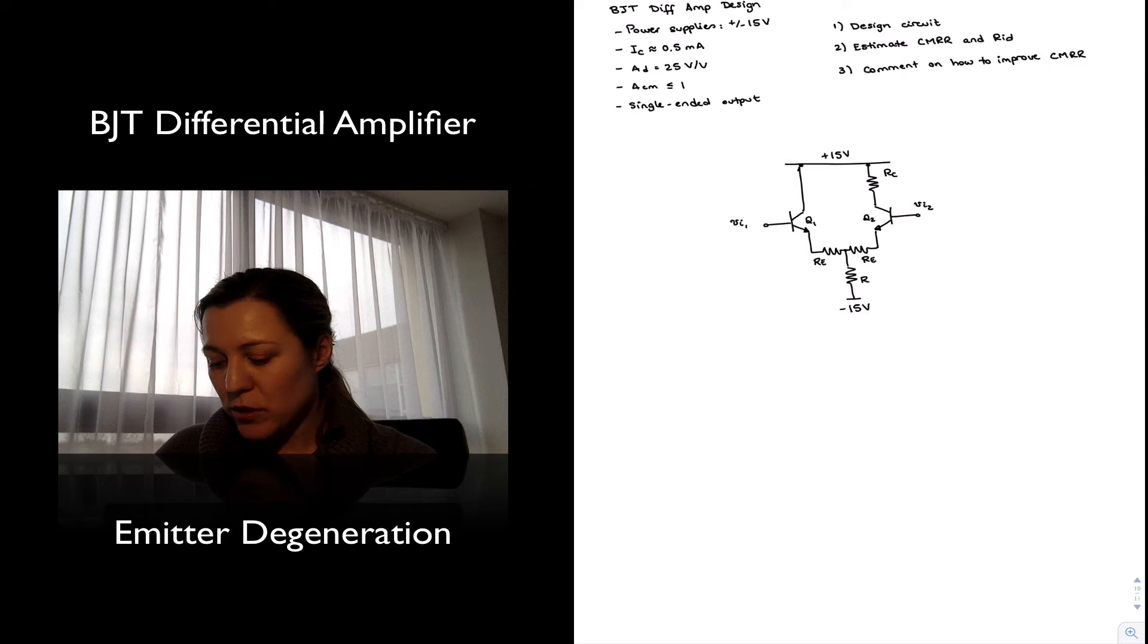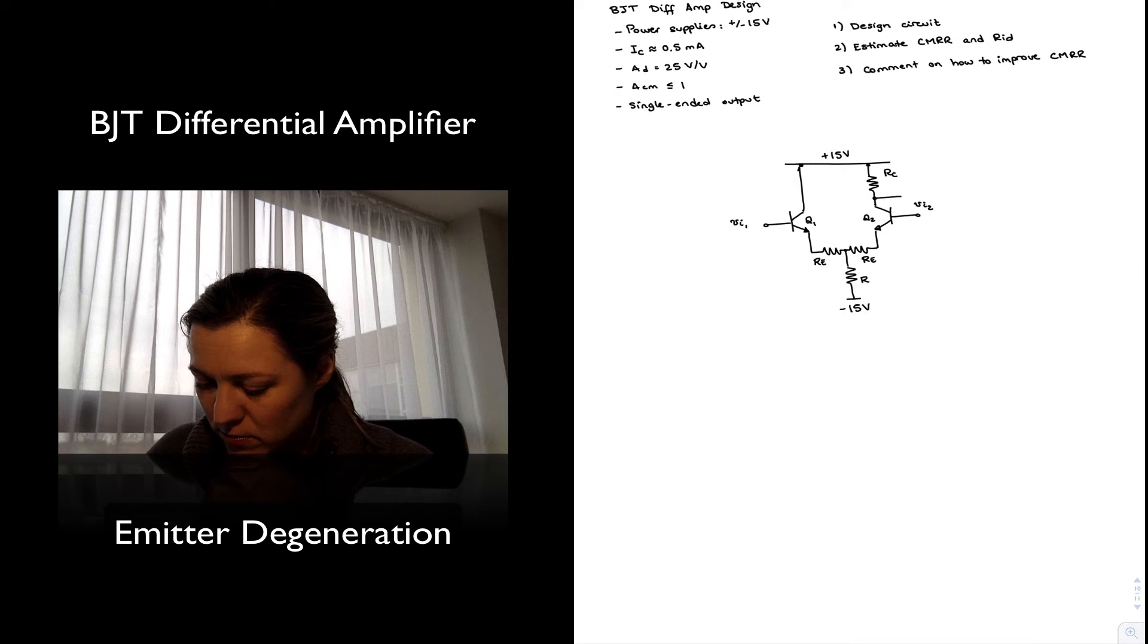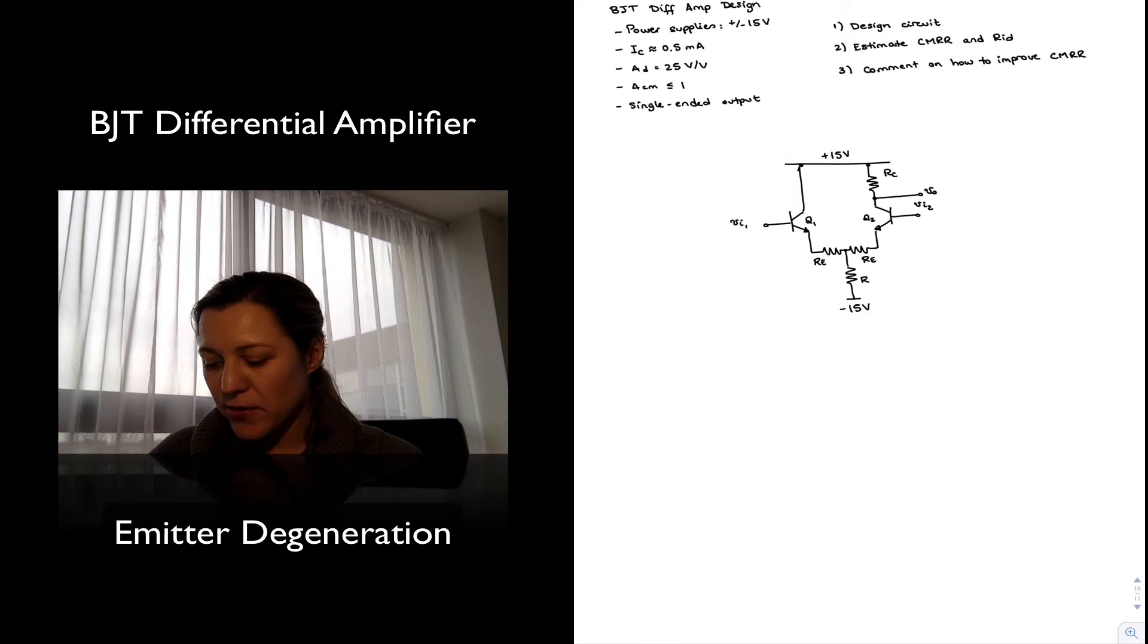And here for my current source, I am going to use the simplest possible configuration, which is just a resistor connected to negative VEE. In this case, negative 15V. These are going to be my RE resistors. RE and RE. And I am going to refer this as my resistor R.